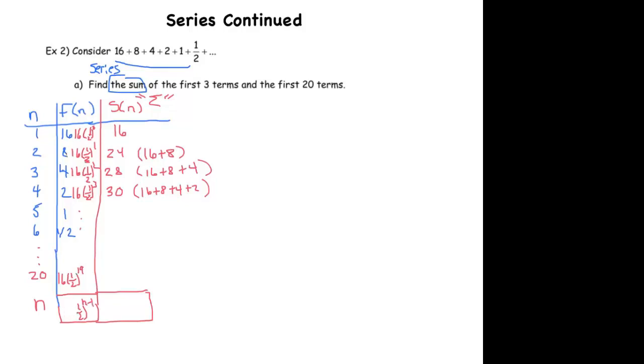16 times one half to the n minus one. So now we have the closed form rule for our geometric sequence. And so now we can apply Euclid's method to actually come up with that, which is what we're interested in. That will be the sum of the first n terms.